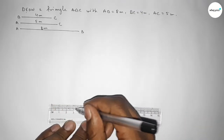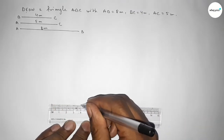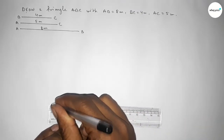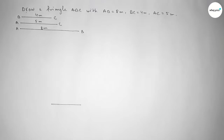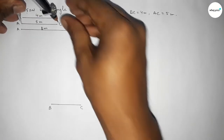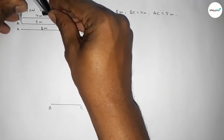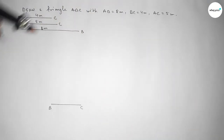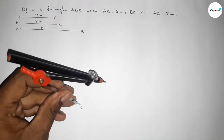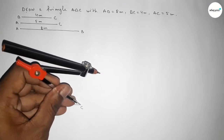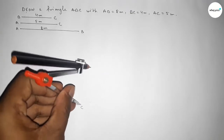Now we have to draw a line of length 4 centimeter. This is 4 centimeter. Now taking point B here and point C here. Now taking the length AC equal to 5 centimeter using compass, putting the compass on point C, and drawing an arc on this side.